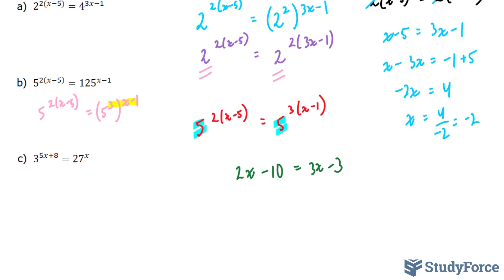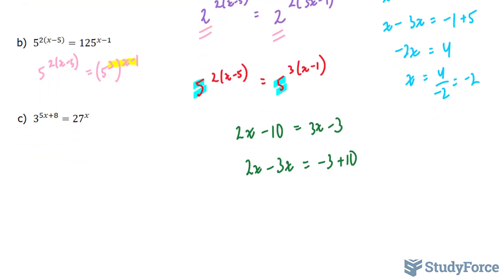We're going to bring all the x terms to one side and all the constants to one side. So we have 2x minus 3x is equal to negative 3 plus 10. This became plus 10 because I moved it over to the other side. We're left with negative x is equal to negative 7. We have a negative on both sides, therefore, x is equal to positive 7. The negatives cancel out.